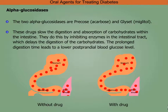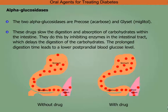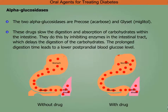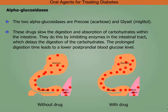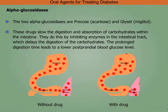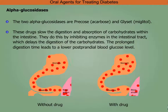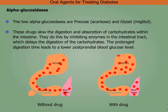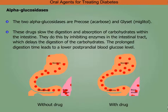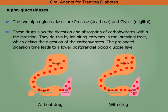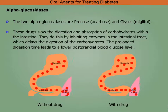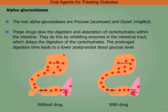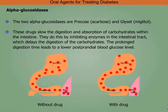Alpha glucosidases: the two alpha glucosidases are Precose and Glyset. These drugs slow the digestion and absorption of carbohydrates within the intestine by inhibiting enzymes in the intestinal tract, which delays digestion of carbohydrates. This prolonged digestion time leads to a lower postprandial blood glucose level.